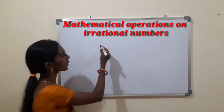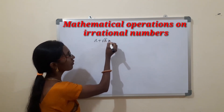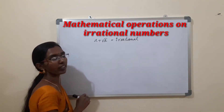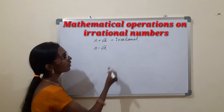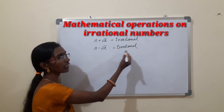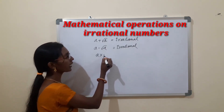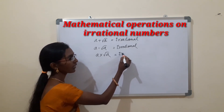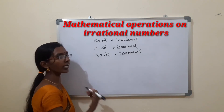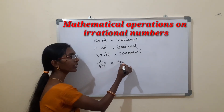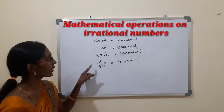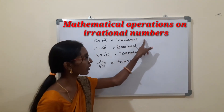Before solving the next problem, I want to explain a small concept on irrational numbers. Adding any number to an irrational number gives an irrational number. Subtracting any number from an irrational number gives an irrational number. Multiplying or dividing any number by an irrational number also gives an irrational number.